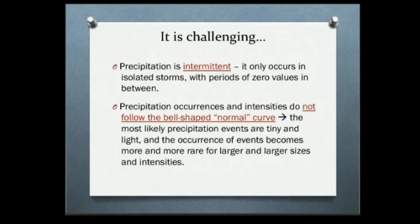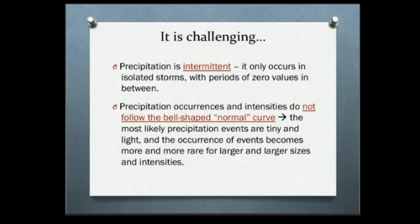This is challenging because precipitation is a bad guy. Precipitation is not a continuous process — it's intermittent. It only occurs in storms, and between two storms there are periods of zero rain. Also, if you know anything about statistics, precipitation doesn't follow the nice normal bell curve shape. This is because most of the precipitation events are really tiny, and large intensity, large size events are much more rare.